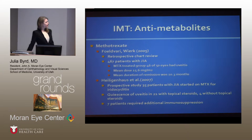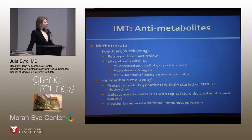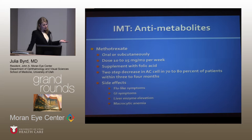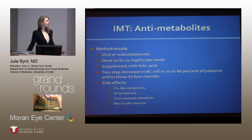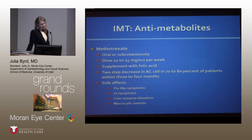In terms of anti-metabolites, methotrexate is the first-line therapy. There is good evidence that it does control uveitis in JIA patients. A good response is defined as a two-step decrease in anterior chamber cell grading in about 70 to 80 percent of patients within three to four months. There can be significant side effects, and anytime patients are on anti-metabolites or biologic therapies they need to be monitored with labs, with close attention to potential side effects, and they need folic acid supplementation.